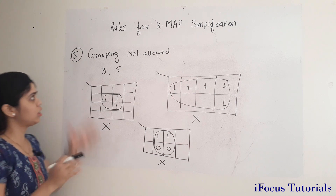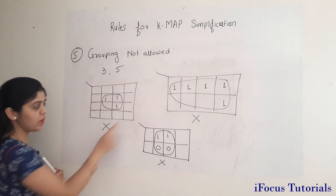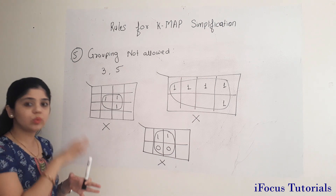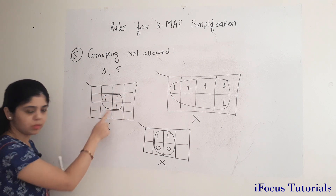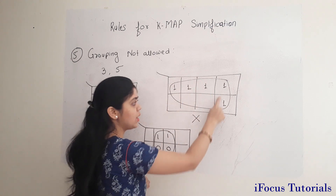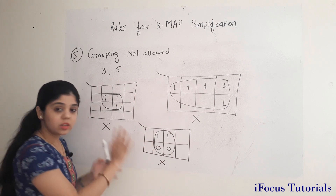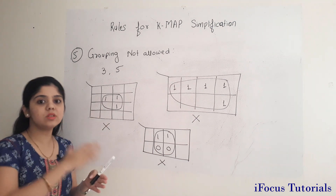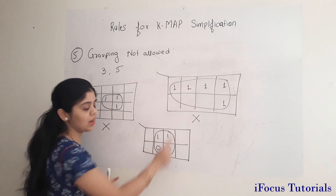The next rule is what groupings are not allowed. Groups of 3, 5, or 7 are not allowed. For example, if three boxes are filled with 1s, you cannot make a group of those three. Similarly, grouping five cells together is not allowed. Additionally, any group mixing 1s and 0s together is always invalid.